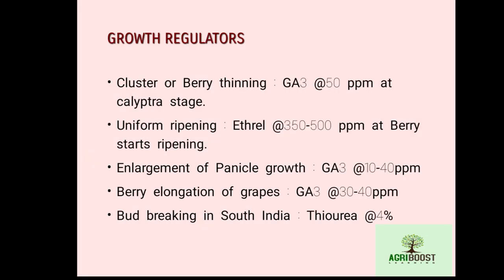Growth regulators used in grape cultivation: for uniform ripening, Ethrel should be used at 350 to 500 ppm when berry starts ripening. For berry thinning, GA3 at 50 ppm at calyptra stage. For enlargement of panicle, GA3 at 10 to 40 ppm. For elongation of berry, GA3 at 30 to 40 ppm. For bud breaking in South India, thiourea should be used at 4 percent.